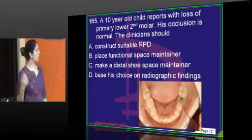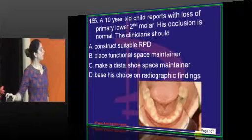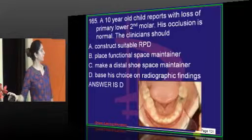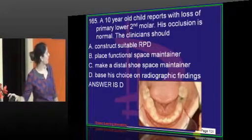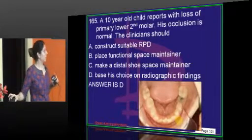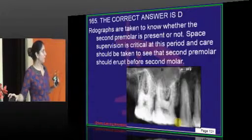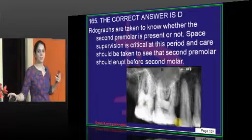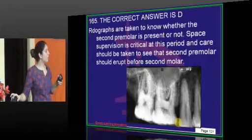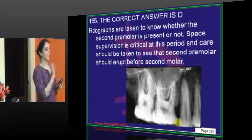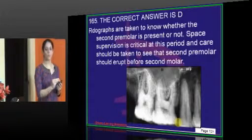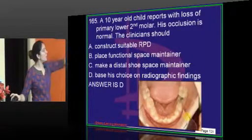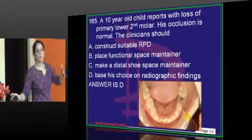A 10-year-old child presents with loss of the primary lower second molar; occlusion is normal. Radiographs have to be taken to see whether the premolar is present, its inclination and angulation, whether it has erupted, is ankylosed, and what the problem is. Without a radiograph you usually cannot identify the treatment plan or do the diagnosis. When you feel it is such a complicated question, go for a radiograph, because they haven't given a reason why there is loss of the primary lower second molar.